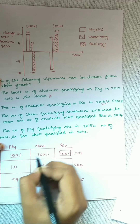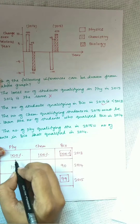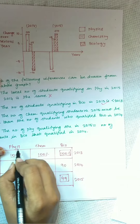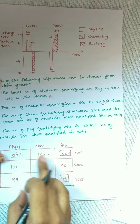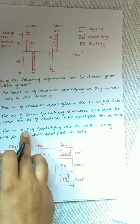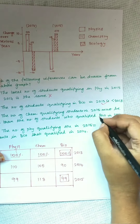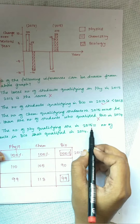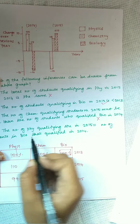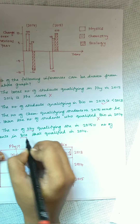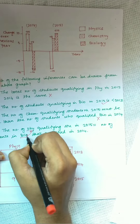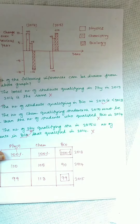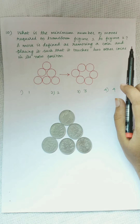For chemistry, an 8% increase from 105: 105 × 8% = 8.4, so 105 + 8.4 = 113.4, rated as 113. For biology, a 10% increase from 90: 10% of 90 is 9, so 90 + 9 = 99 students.